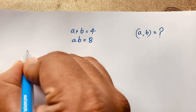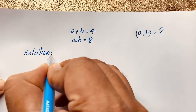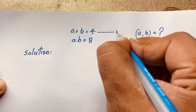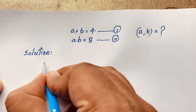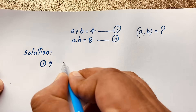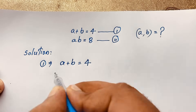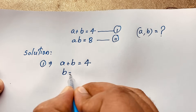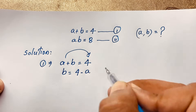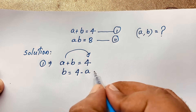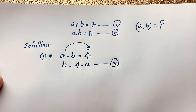I solved this question using an easy method. This is our first equation and this is our second equation. First of all, I take our first equation which is a plus b is equal to 4. Then b will be 4 minus a — I move a to this side, it will be negative a. So b is equal to 4 minus a. This is our third equation.